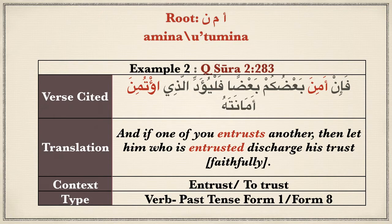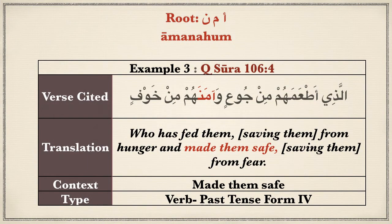This next example covers two verbal forms of this root: Aminah, form 1 verb, and form 8 verb, i'tamanah. Aminah is used here in a transitive verb sense to mean entrusting with something, and u'atumina is a passive form 8 verb meaning 'to be entrusted with'. The subject is not mentioned, but the one entrusted should discharge his trust faithfully. I hope you are amazed by how accurately the Quran uses these grammatical forms.